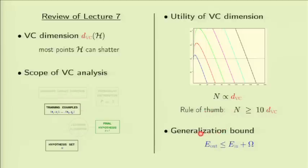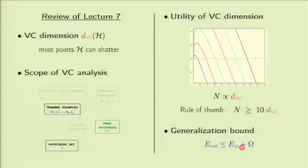We ended by summarizing the entire theoretical analysis into a simple generalization bound: a bound on the out-of-sample performance given the in-sample performance. That involved adding a term capital omega, which captures all the theoretical analysis — a function of N, of the hypothesis set through the VC dimension, and of your tolerance delta. Although this is a bound, in reality E_out equals E_in plus something that behaves like omega, and we will take advantage of that when we get to regularization. That's the end of the VC analysis, the biggest part of the theory here.